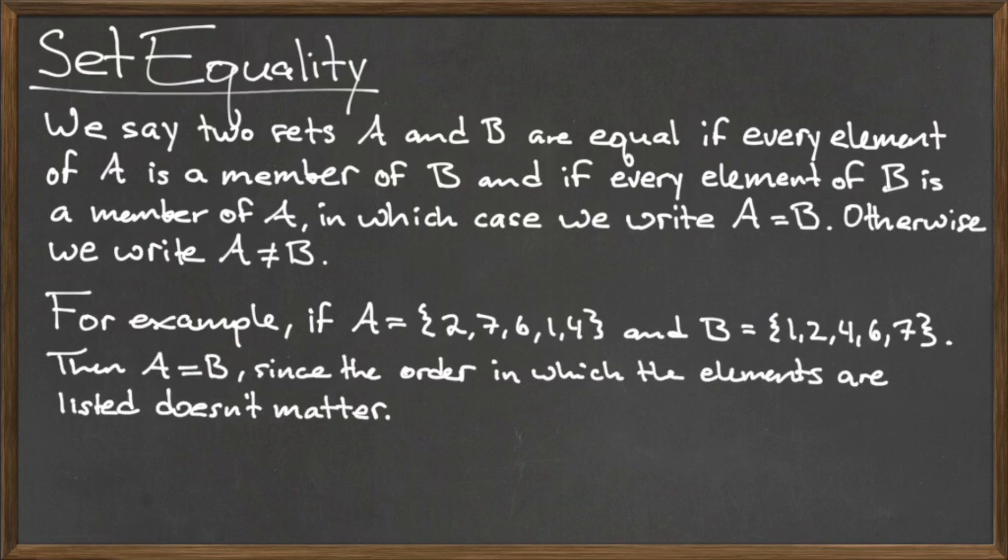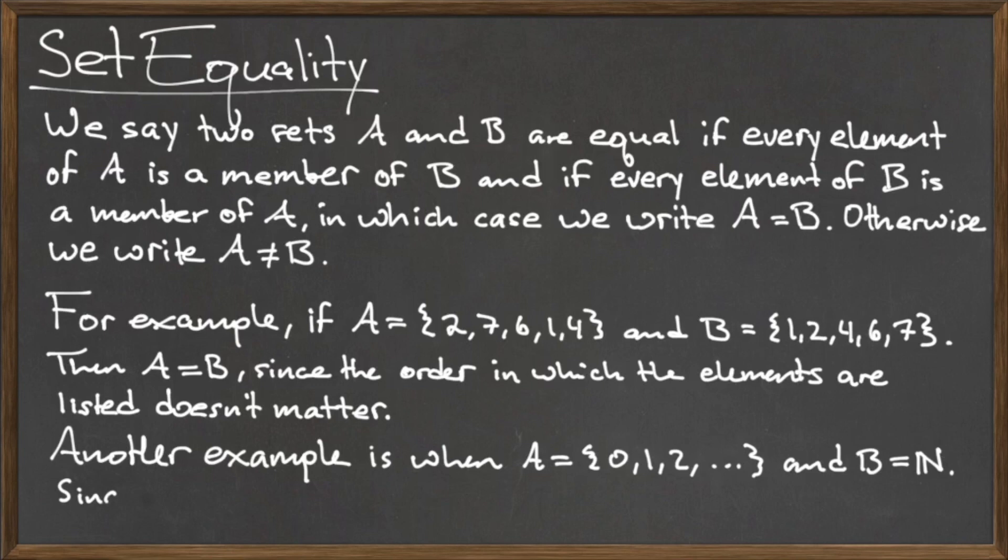As an example of two sets that are not equal, consider the set A, and the set B, which is the natural numbers. The set A contains the element 0, while the natural numbers do not contain 0. Since A has an extra element, we say that the sets A and B are not equal.